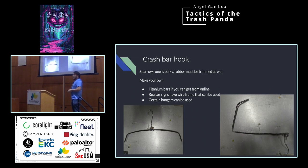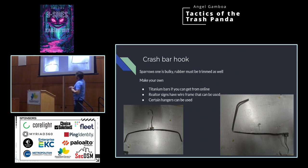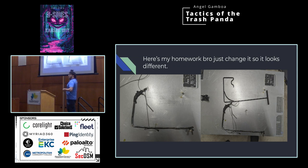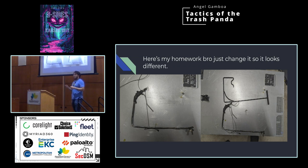Let's talk about crash bar hooks. Crash bar hooks are meant to actuate crash bars from the outside in, making the door think it's opening from the inside. You can make your own — there are titanium bars you can buy online, and realtor signs have wireframes that can be used, and certain hangers can be used. I tried a feeble attempt at a crash bar hook. You have the original crash bar hook and then the one I made out of a single hanger, some thread, and some tape. The commercial one has about a 20-pound pull before deforming, but it snaps back. The hanger version has about a 5-pound pull before it breaks — but if it's a 5-pound crash bar, cool.